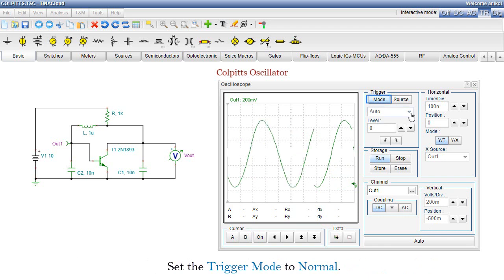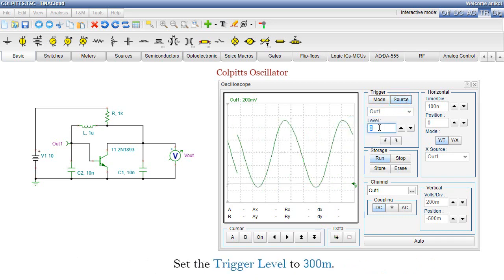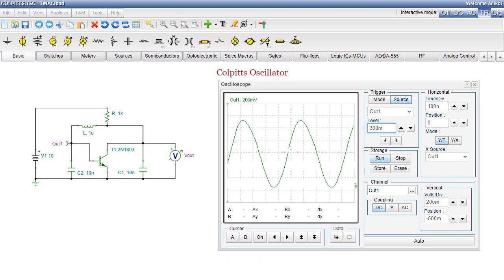Set the trigger mode to Normal. Set the trigger source to OUT1. Set the trigger level to 300 millivolts. Consequently, the waveform is stabilized.